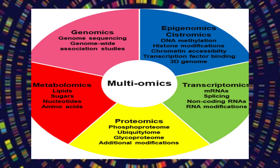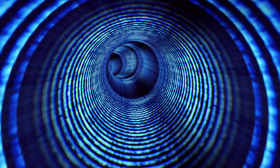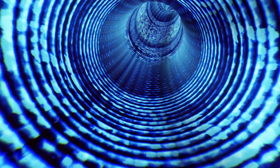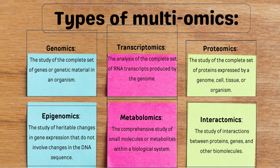The genome is like a blueprint holding all your genetic information. Then we have the epigenome, which tells genes when to turn on and off. Next, there is the transcriptome and proteome, covering proteins and what they are doing. The metabolome is about the tiny molecules running around and keeping everything working. And finally, interactomics is figuring out how all these pieces work together — a snapshot of all the different ways we can study biology.